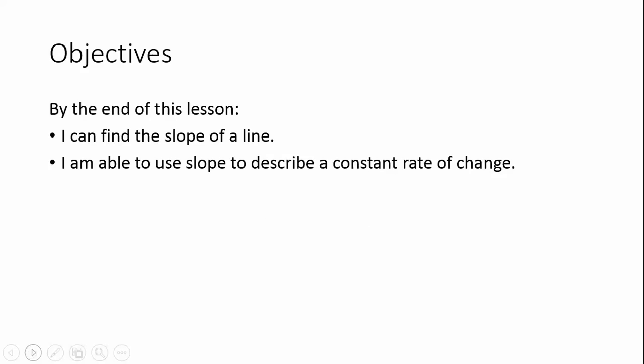Section 8.6 is all about slope. By the end of this lesson, I want you to be able to find the slope of a line, either given a graph or given two points, and also be able to use the slope to describe a constant rate of change.